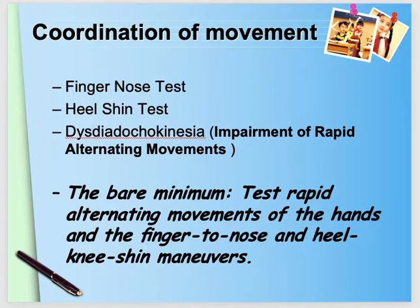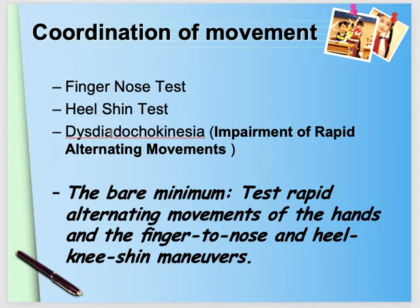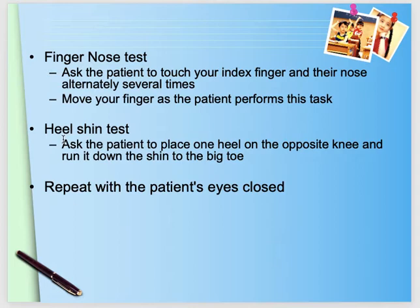Then we check coordination, which is basically the function of the cerebellum. We perform alternating movements of hands and fingers, or a heel-shin test. Dysdiadochokinesia is one of the findings in cerebellar problems — these patients cannot perform rapid alternating movements. This will also be demonstrated in the video.